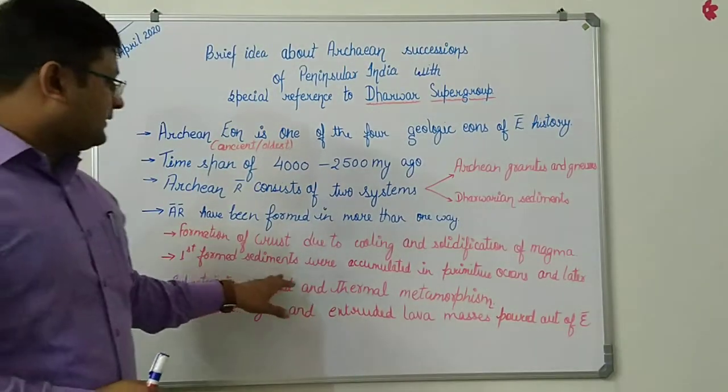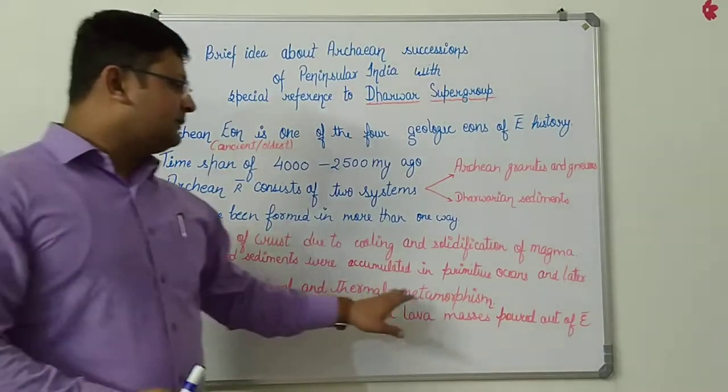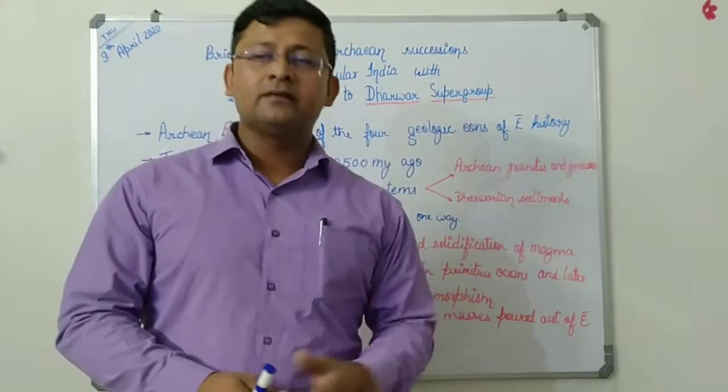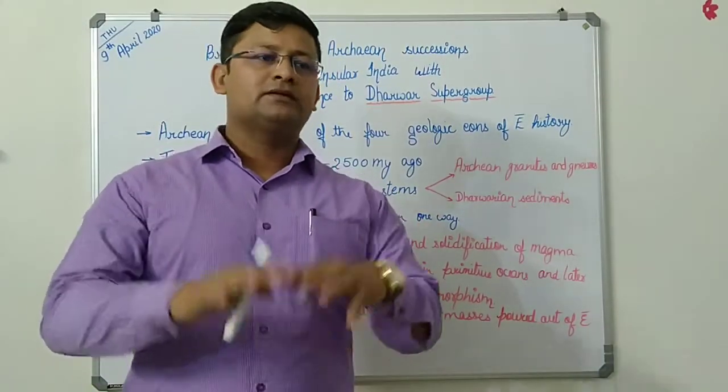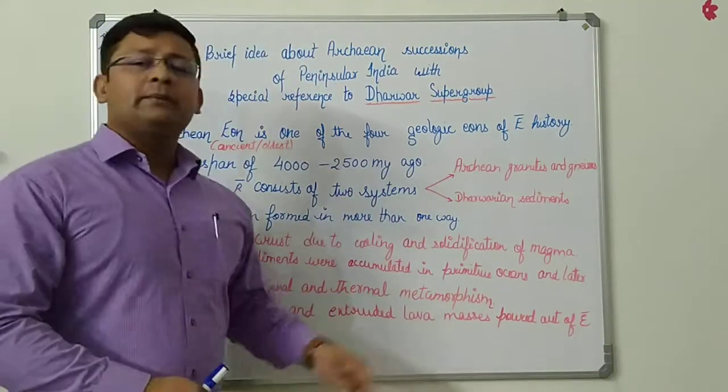The first formed sediments were accumulated in a primitive ocean and later subjected to regional and thermal metamorphism. At that time the temperature and pressure was so immense that the first crust which was formed was ultimately metamorphosed by regional and thermal metamorphism.